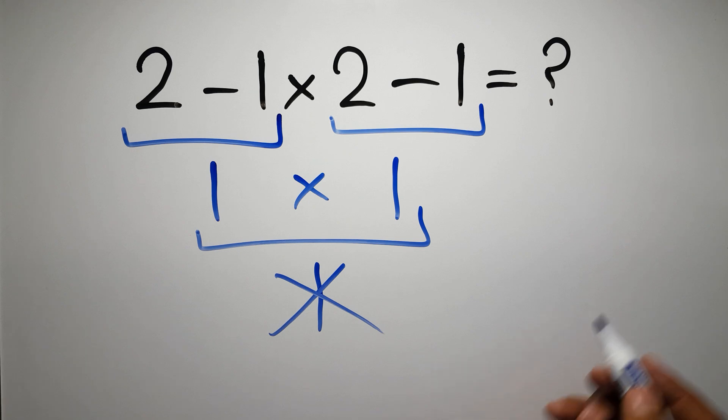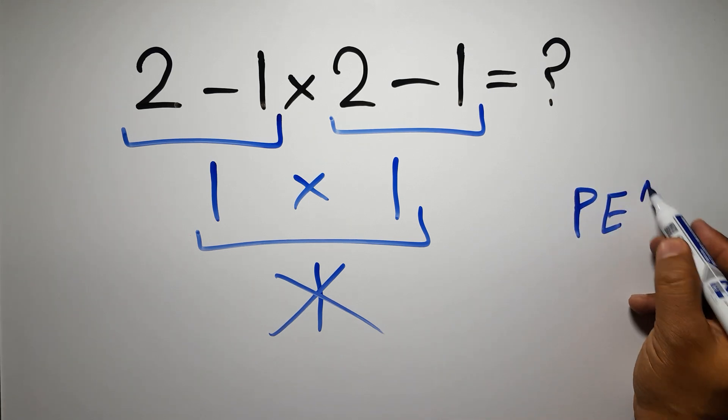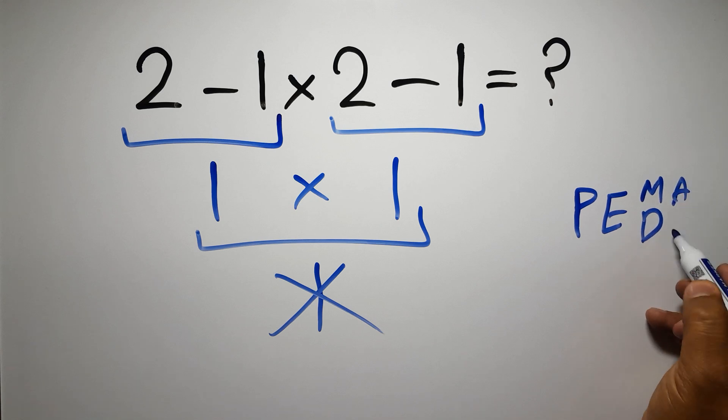Because according to the order of operations, first we have to do parentheses, then exponents, then multiplication or division, and finally addition or subtraction.